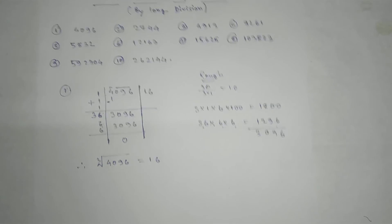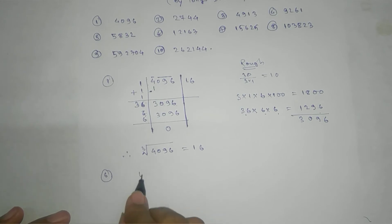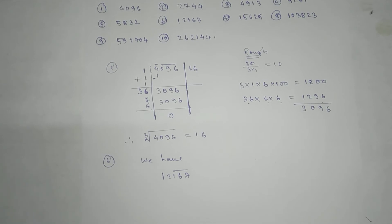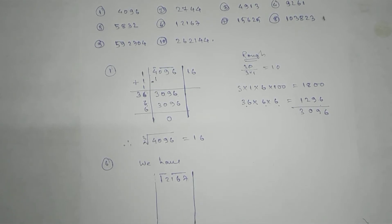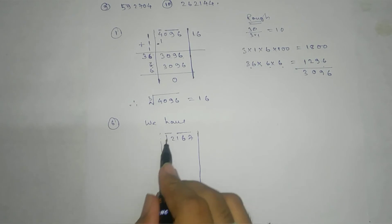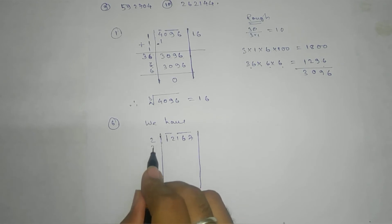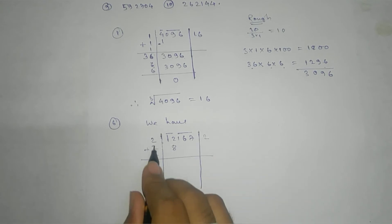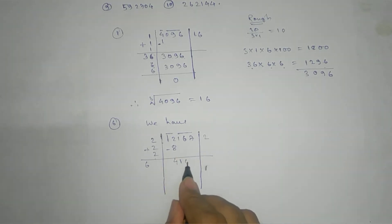Next, the 6th number. We have 1, 2, 1, 6, 7. Make a set — not a pair, but a set of 3 numbers. Whatever remains we take here. Which number's cube is very close to 12? That is 2: 2 into 2 into 2 — 2 cubed gives 8. Add here we get 6; subtract, we get 4. Take this whole set: 1, 6, 7.